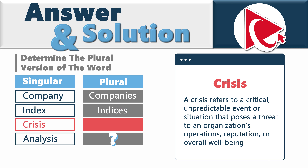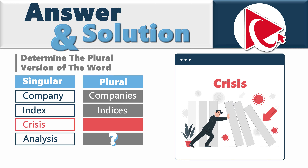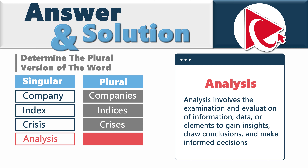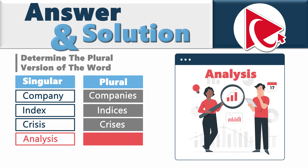Index is a statistical measure that represents the relative change in a group of values or prices. The plural version for index is spelled I-N-D-I-C-E-S, pronounced as 'indices.' A crisis refers to a critical, unpredictable event or situation that poses a threat to an organization's operations, reputation, or overall well-being. The plural version for crisis is spelled C-R-I-S-E-S, pronounced as 'crises.' And analysis involves the examination and evaluation of information, data, or elements to gain insights, draw conclusions, and make informed decisions. The plural version for analysis is spelled A-N-A-L-Y-S-E-S, pronounced as 'analyses.'